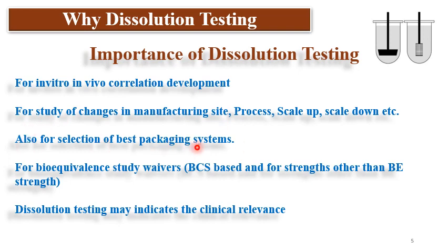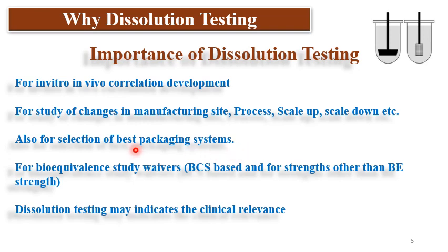Dissolution also guides the selection of the best packaging systems. If a batch is placed on stability in different packaging systems and dissolution quality attributes are met in one but not another, the packaging system can be designed accordingly. Since dissolution is important for understanding in vivo behavior, packaging studies combined with dissolution testing are critical for concluding the appropriate packaging system.